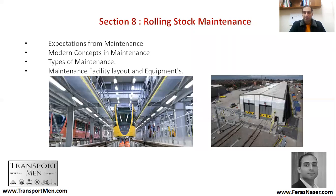We carry on with our explanation for Chapter Two: Railway Rolling Stock Systems, and we have reached Section Eight - Rolling Stock Maintenance. The concepts we'll be covering include customer and operator expectations from maintenance, modern concepts in maintenance, types of maintenance, and maintenance facility layout and equipment.